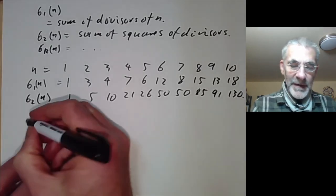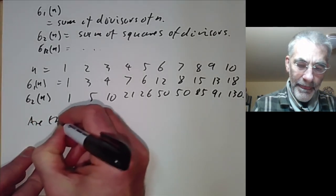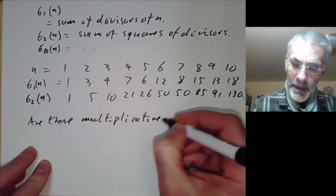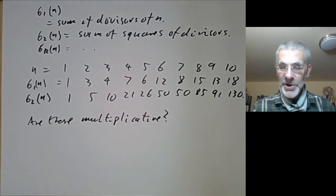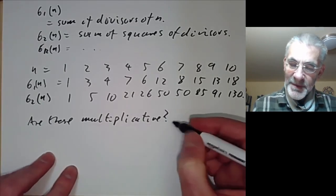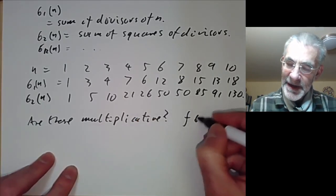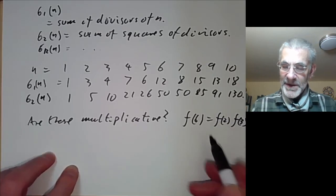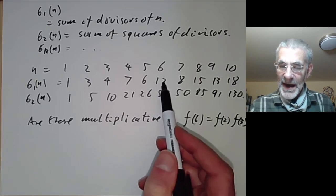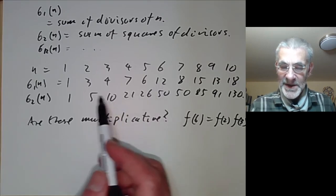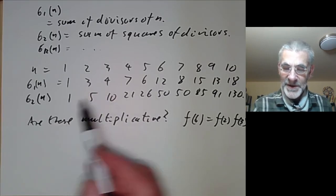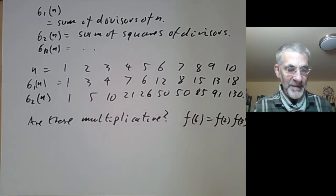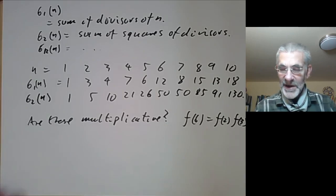Now we can ask: are these multiplicative? We can do a quick check — if f is multiplicative then f(6) should equal f(2)·f(3). Looking at both sigma_1 and sigma_2, f(6) is indeed f(2)·f(3) in both cases. This is quite promising and suggests these might actually be multiplicative functions. Let's verify this properly.